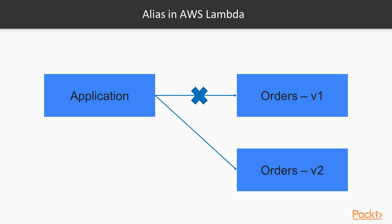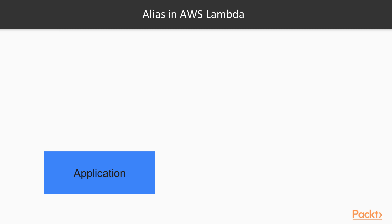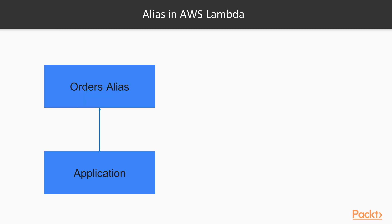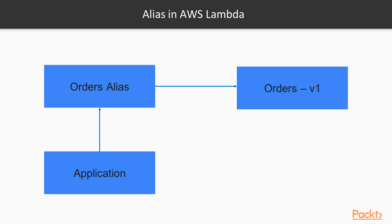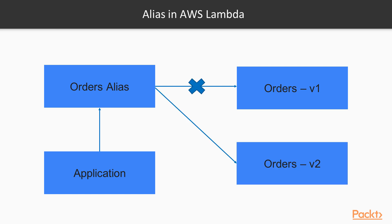The problem with this scenario is that you'd probably have to recompile and redeploy your application every time there's a version change in an AWS Lambda function, which doesn't make sense. That is where you can use an alias. Your application points to an alias, and that alias can then point to whatever version of the Lambda function you want — version one at one point, version two at another.